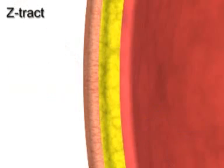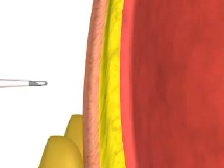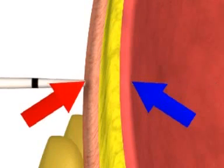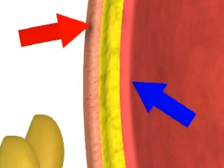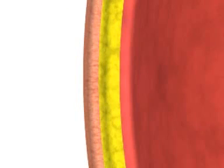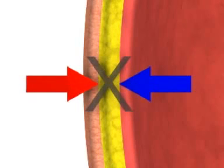Alternatively, a z-track technique may be used. In this method, the cutaneous tissues are pulled two centimeters caudad prior to needle insertion and advancement through the peritoneum. When the catheter is withdrawn at the end of the procedure, the cutaneous entry site will retract to its original position. Both techniques ensure that the cutaneous and peritoneal insertion sites do not directly overlie each other, theoretically minimizing the risk of an ascitic fluid leak following the procedure.